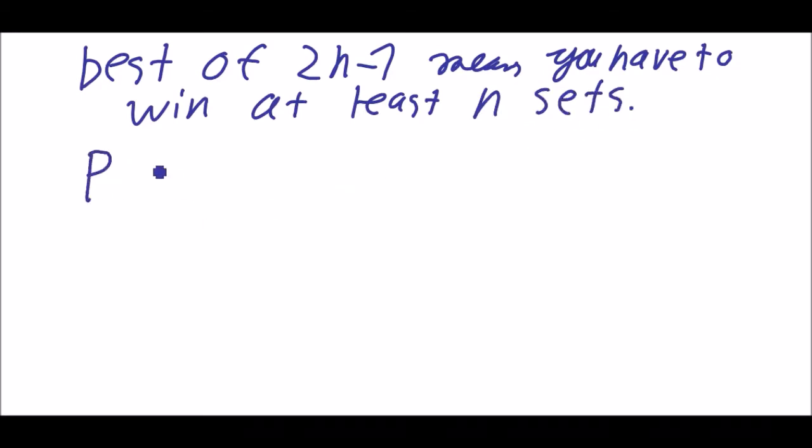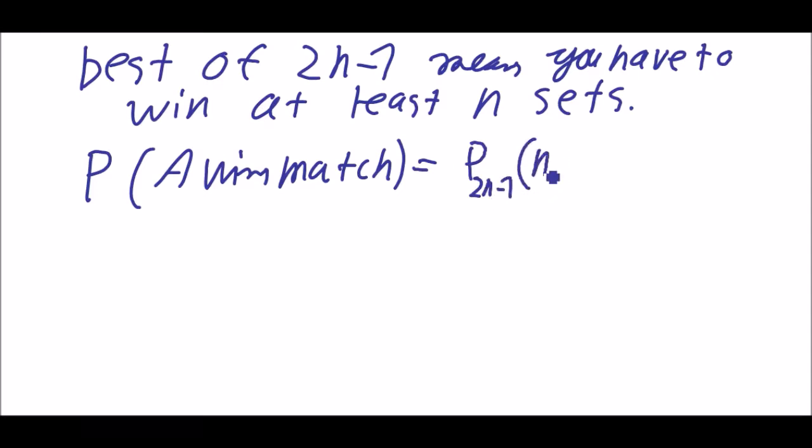And the probability of A wins the match—the probability P is then P(2n-1 choose n) times p to the n times (1-p) to the (n-1), plus P(2n-1 choose n+1), and so on, plus P(2n-1 choose 2n-1), because it's the probability that you win at least n sets.